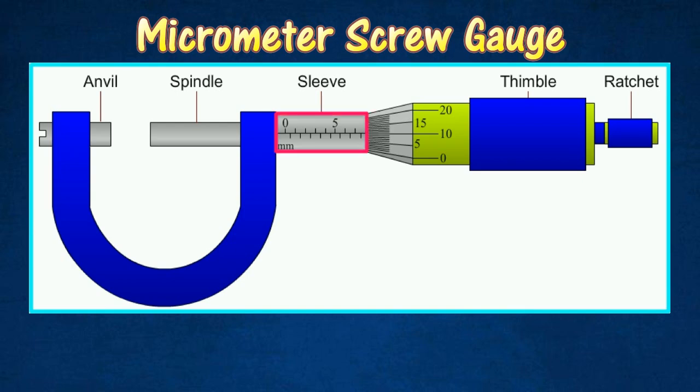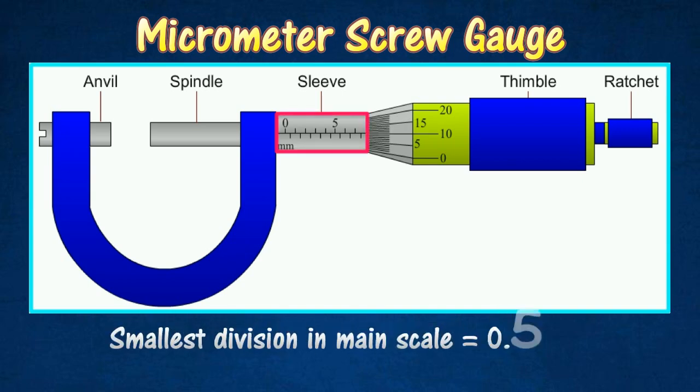The micrometer screw gauge has main scale on the sleeve and the circular scale on the thimble. The main scale is calibrated in millimeters, and the smallest division on the main scale is 0.50 mm.